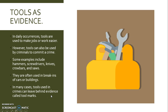Tools are evidence. In daily occurrences, tools are used to make jobs or work easier. However, tools can also be used by criminals to commit a crime. Some examples include hammers, screwdrivers, knives, crowbars, and saws. They are often used in break-ins of cars or buildings. In many cases, tools used in crimes can leave behind evidence called tool marks.